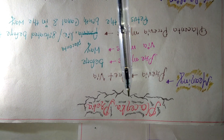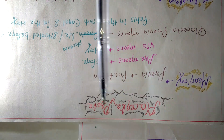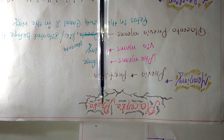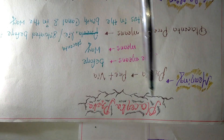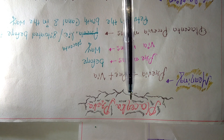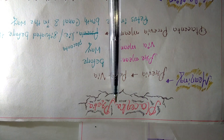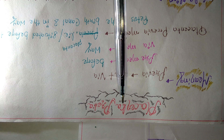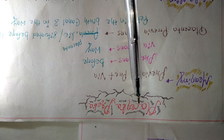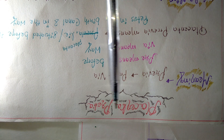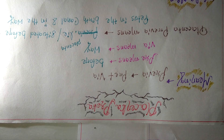Today we will start placenta previa, a topic of midwifery and obstetrical nursing. Placenta is a structure which provides oxygen and nutrients to the baby and removes waste products from the baby's blood. The umbilical cord also arises from the placenta.